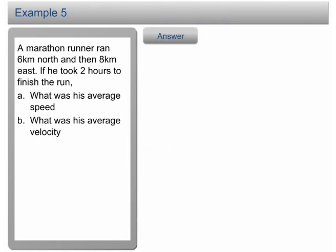Example 5. A marathon runner ran 6 km north and then 8 km east. If he took 2 hours to finish the run, A, what was his average speed? B, what was his average velocity? Click on the answer button to proceed.